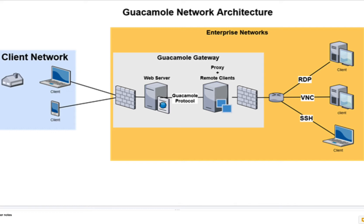The front end that faces the web is a web server — that's what people are going to be accessing, pointing their browser to. And the web server, once the session is established there, uses what the project calls its Guacamole protocol to talk to the Guac-D. It's a server that, in turn, goes out the backside and speaks any number of protocols to the remote servers you're trying to access.